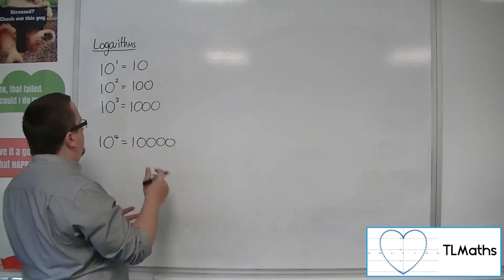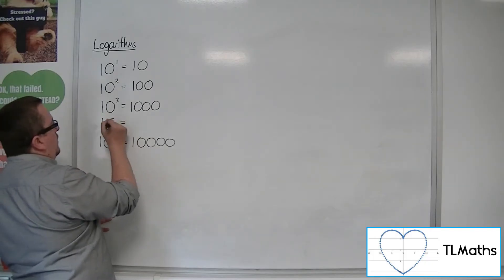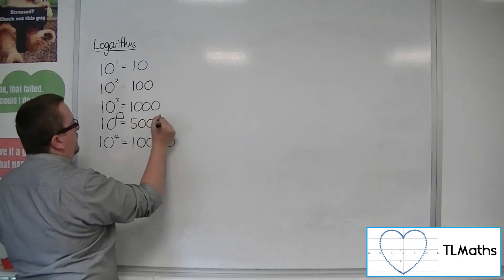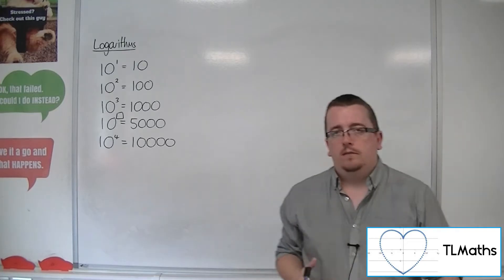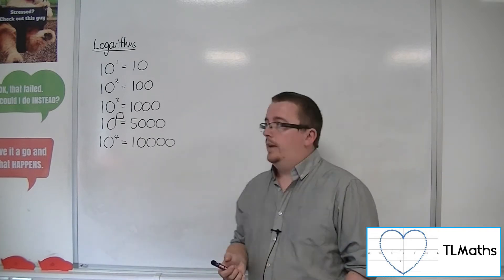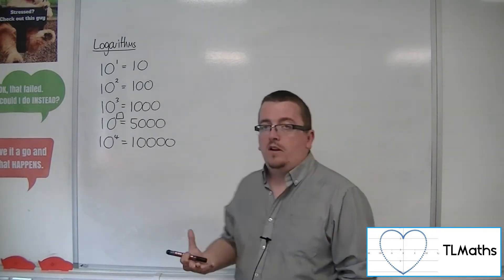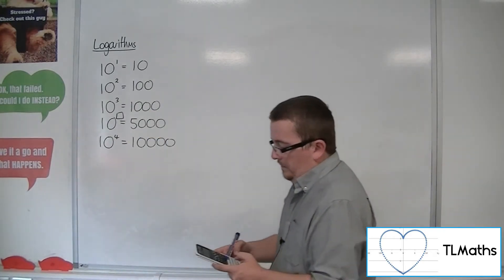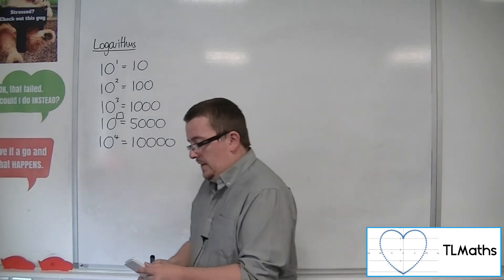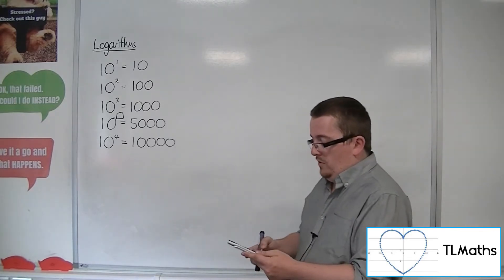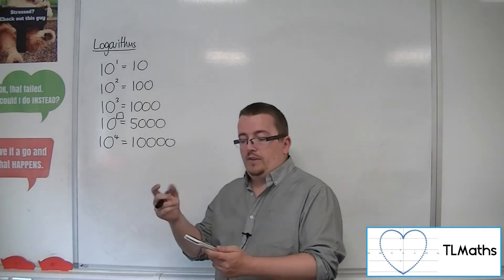But what would 10 to the something have to be to give 5,000? What would that number have to be? We know it would have to be between 3 and 4, but what exactly? We could do it by trial and improvement. If we try 10 to the 3.5, that's 3,162 — too small. So we go to 3.7, that's 5,011, very close. Then 3.68 gives 4,786.